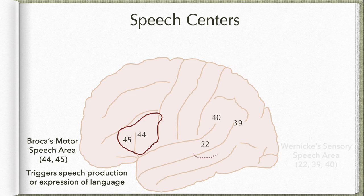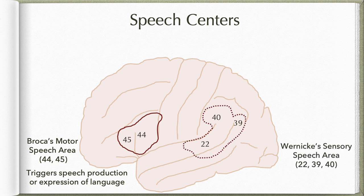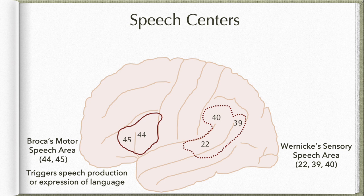Then we have Wernicke's sensory speech area, which encompasses parts of area 22, 39, and 40. Area 22 is located in the superior temporal gyrus — it is the higher association area for the auditory pathway. Area 39 is the angular gyrus, the higher association area for the visual pathway. Area 40 is the supramarginal gyrus, the higher association area for the somatosensory pathway. However, Wernicke's sensory speech area has been variably described by different authors — some take only area 22 to be Wernicke's area.